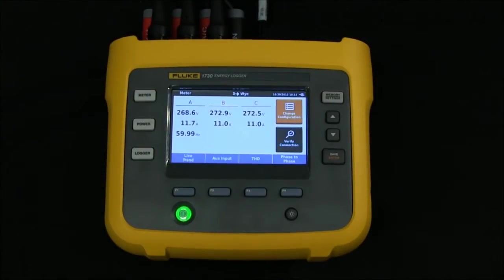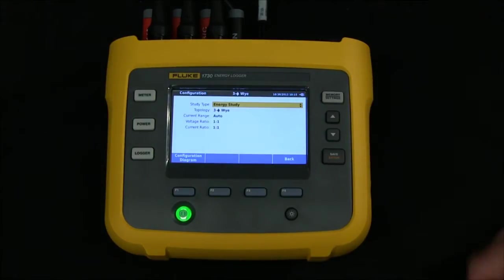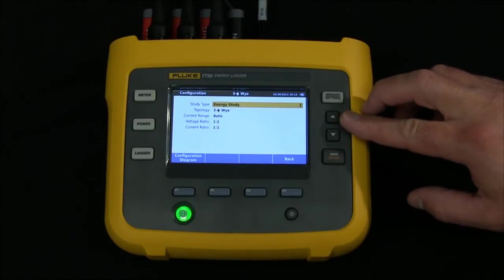To start a recording session with the Fluke 1730 energy logger, when you first turn the instrument on, it'll come up to the meter screen. From this point, hit change configuration and set the energy study or load study option under study type.